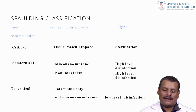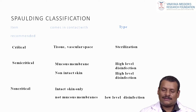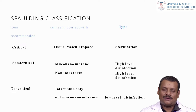According to Spaulding classification, critical instruments come in contact with tissue and vascular spaces and require sterilization. Semi-critical instruments contact mucous membranes and non-intact skin, requiring a high level of disinfection. Non-critical items contact only intact skin and require low-level disinfection. Critical instruments contact blood products or the oral cavity; semi-critical instruments contact mucous membranes but are not invasive; non-critical instruments are placed away from the dental field.